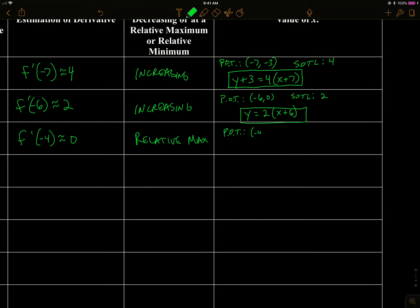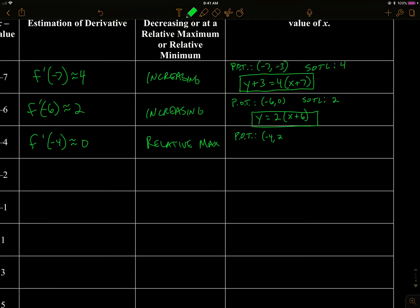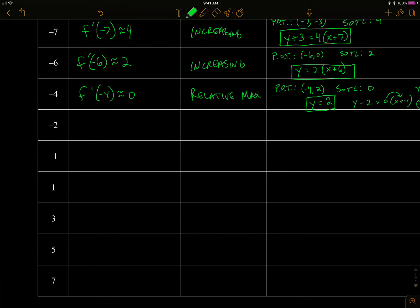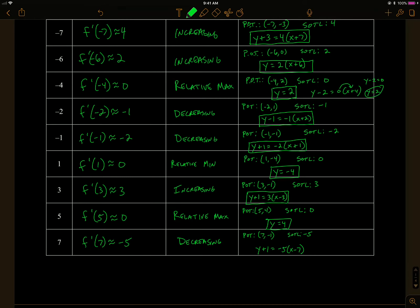Pause the video here and complete the rest of the table. I'll do the slope of zero case with you since it's a little different. The point of tangency is at negative four, y value looks like two. The slope is zero, so we have a horizontal line. You could write y minus two equals zero times x plus four, but zero times that is just zero, so it simplifies to y equals two.